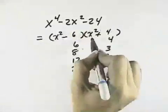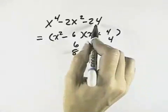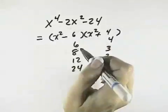So we have x squared minus 6 times x squared plus 4. That will give us the negative 2x squared in the middle, as well as the negative 24 in the last term and the x to the 4th in the first term.